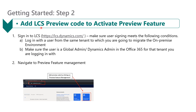The next step is to add the LCS preview code to activate the preview feature. To do so, log in to lcs.dynamics.com. Make sure the user signing in is from the same tenant to which you're going to migrate the on-premise environment, and that this user is a global admin or a Dynamics admin in Office 365. Once done, navigate to the preview feature management tab and proceed to the next step.